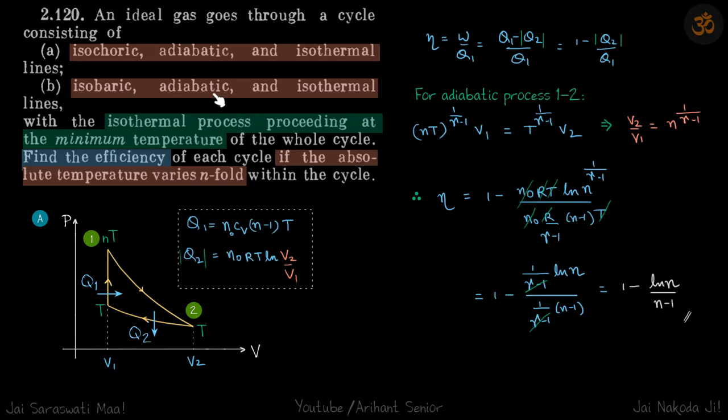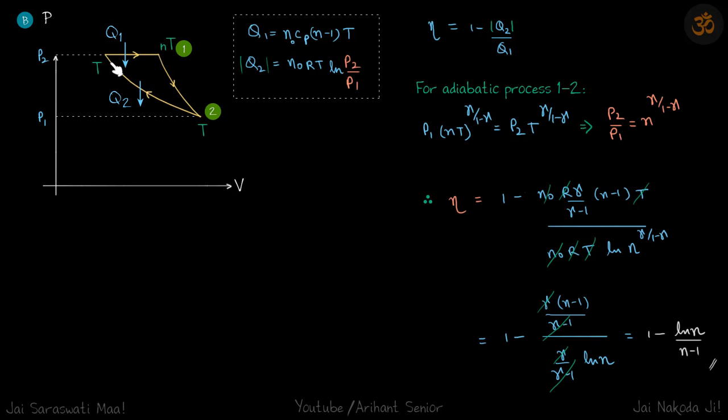And the second part: isobaric, adiabatic, and isothermal, so that is going to look like this. So again, isothermal is at the bottom with the minimum temperature, and this is the adiabatic line, this is the isobaric line.